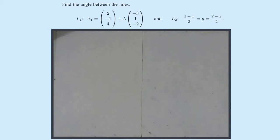So line 1 is absolutely fine. We know the direction vector for line 1. It's just the bit with the lambda, so it's (-3, 1, -2).